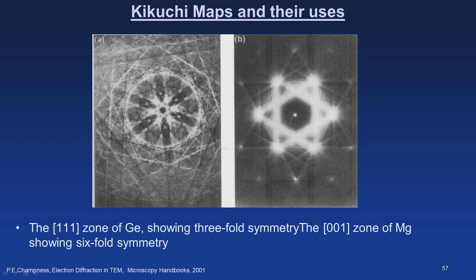Other uses of Kikuchi maps include finding the crystal symmetry. Just by looking at Kikuchi maps you can tell what symmetry your crystal has. For example, the 111 zone of germanium shows threefold symmetry, and the 001 zone of magnesium shows sixfold symmetry. These are immediate applications — just by looking at a diffraction pattern you obtain basic information about the crystal system. They are very powerful in that manner.